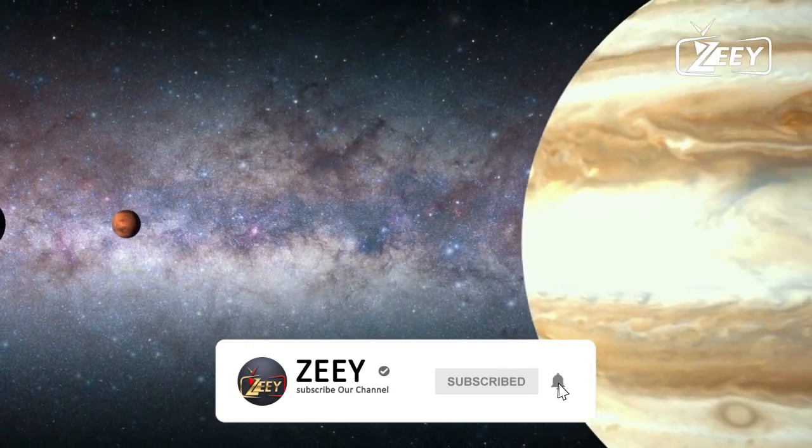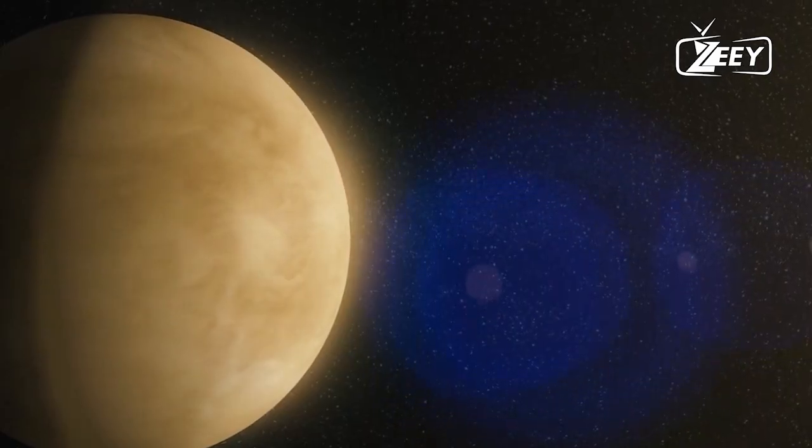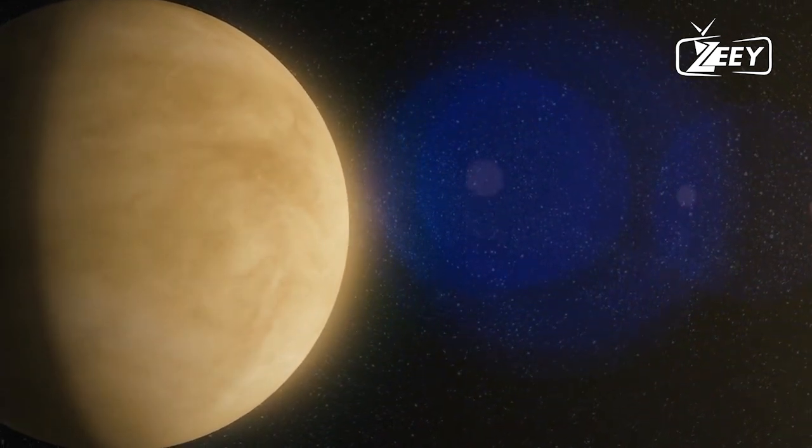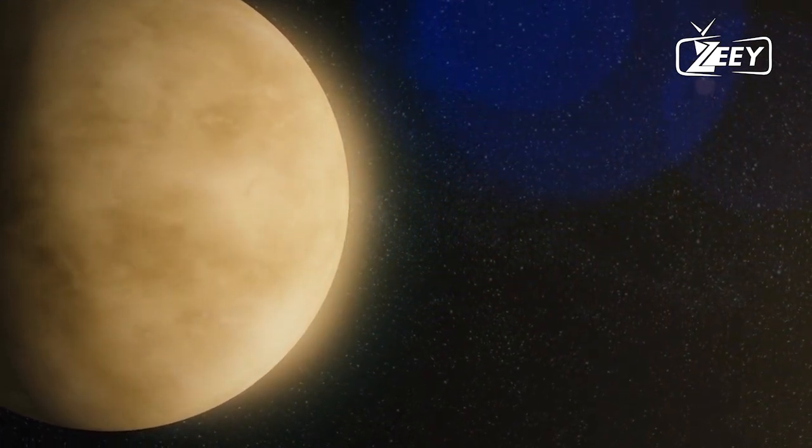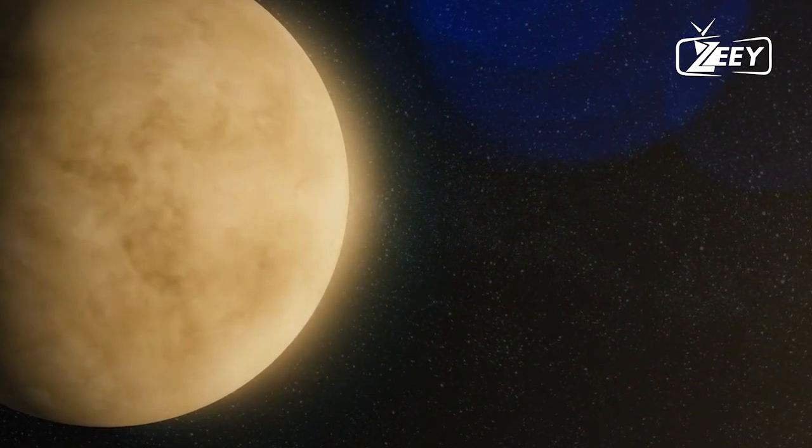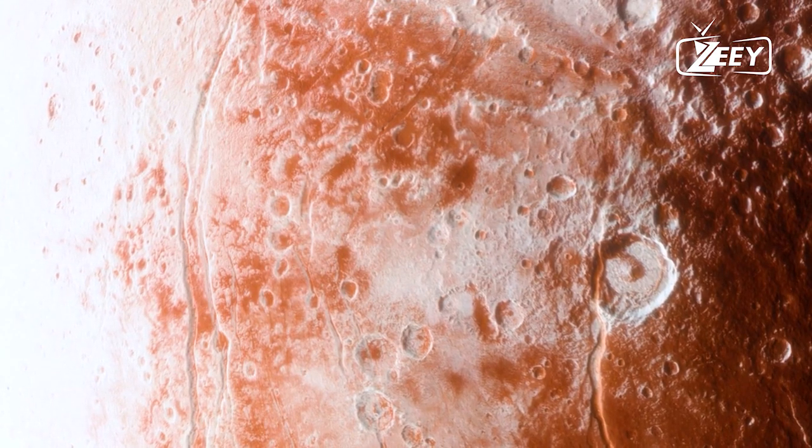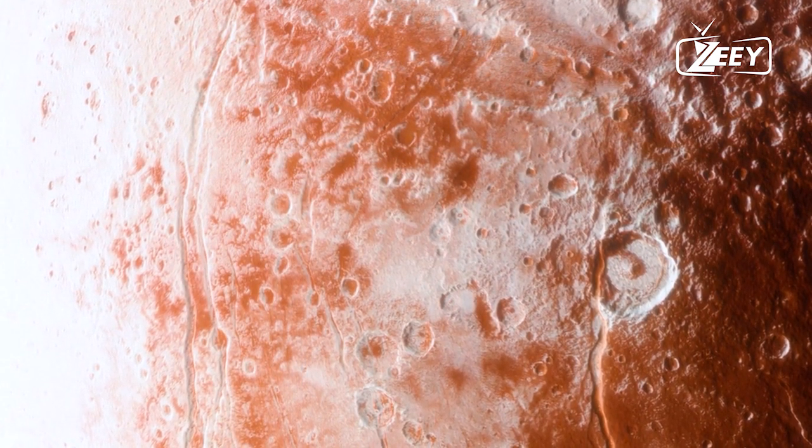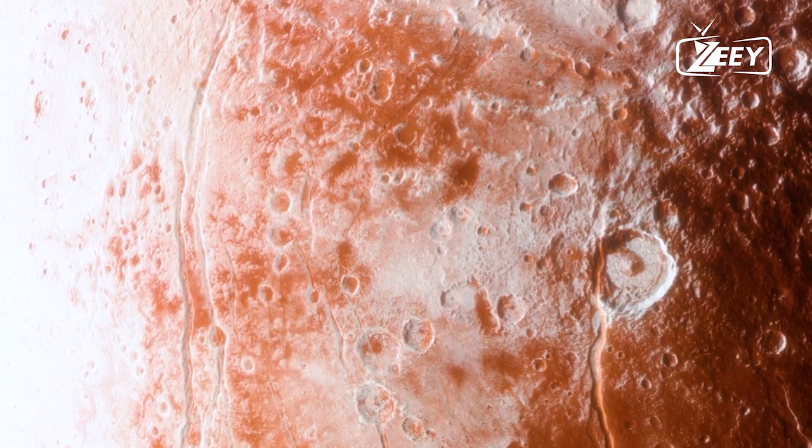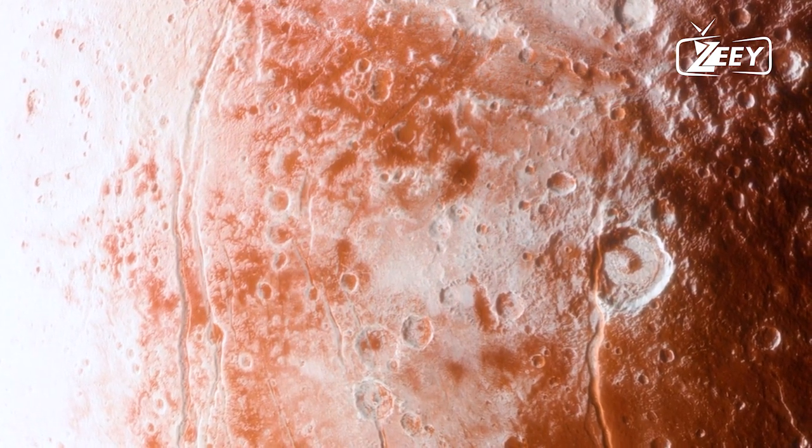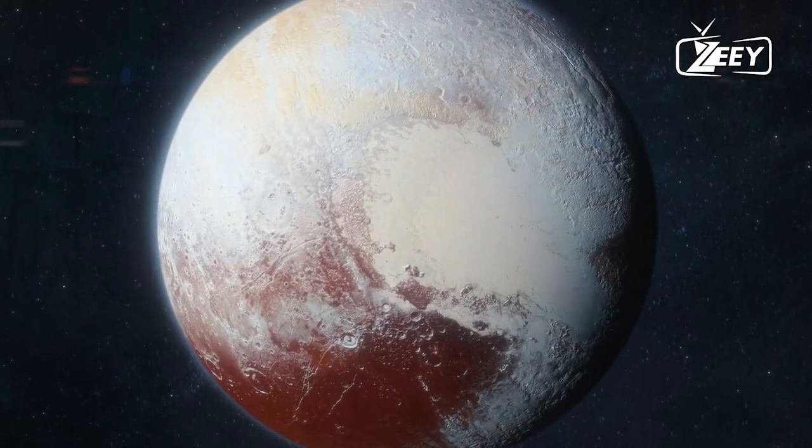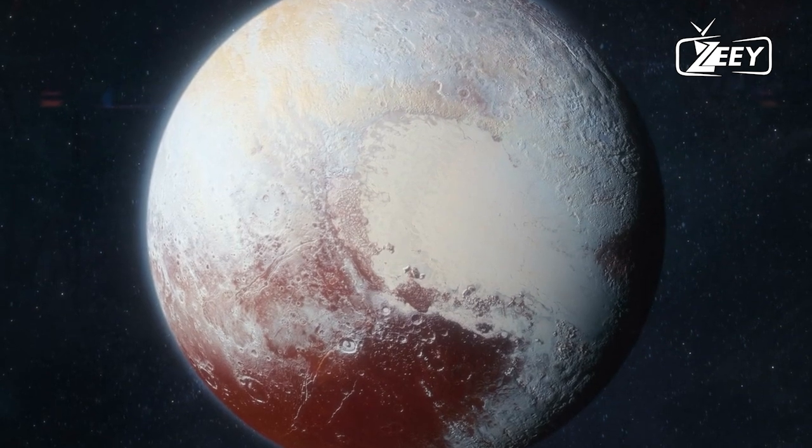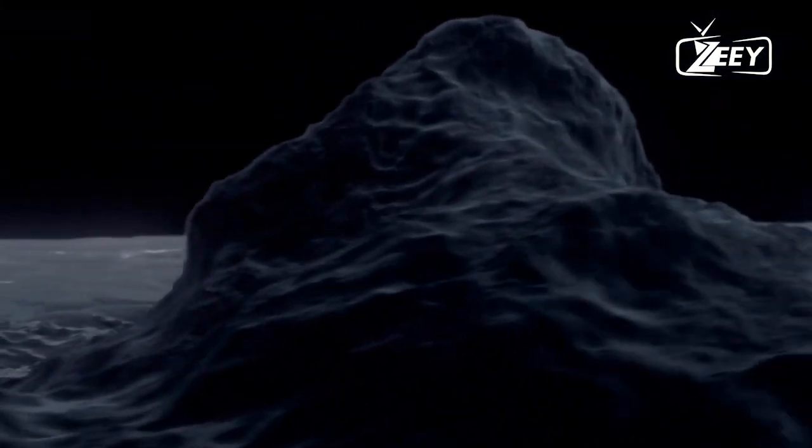This tells us that this liquid ocean might have come from a fast and violent beginning for the planet. Because of this, many researchers think that Pluto might still be geologically active. When they observed the cracks on Pluto's surface, they found out that these fissures ran for hundreds of miles into the planet's icy surface and were around 2.5 miles deep. Scientists believe these fissures were formed because of a freezing ocean beneath the surface because when water freezes it expands, creating pressure and cracking the icy shell.